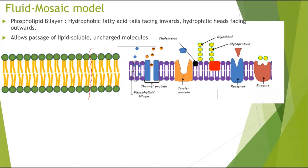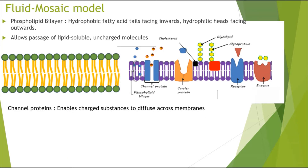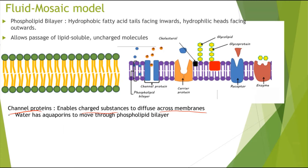Small lipid-soluble substances can just pass through the gaps in the phospholipid bilayer. Moving on to channel proteins — these enable charged substances to diffuse across membranes, since charged substances can't just pass through the phospholipid bilayer. You're also required to know that water has aquaporins which allow it to move through the phospholipid bilayer, and these are also channel proteins.